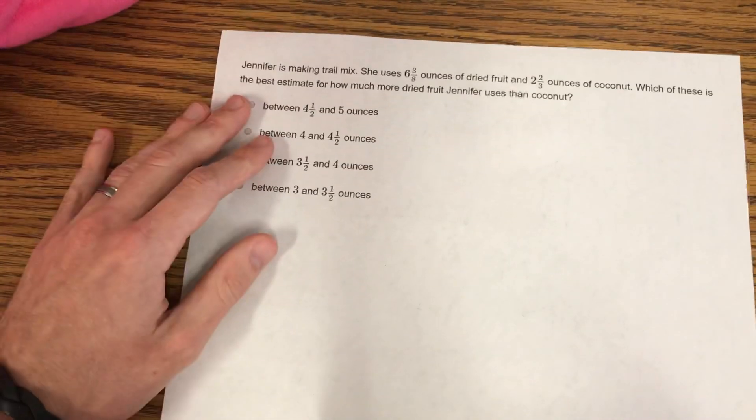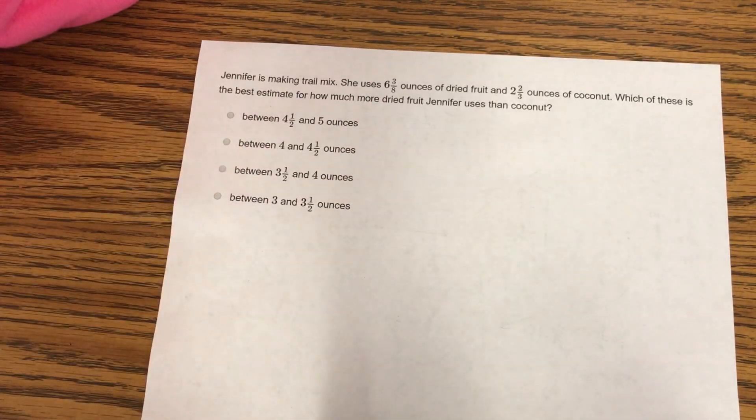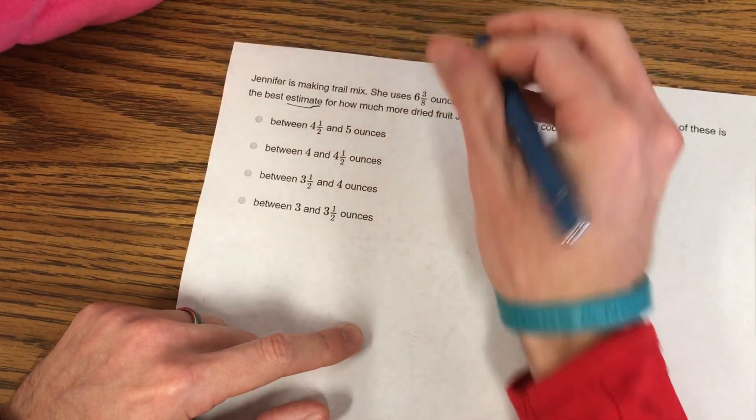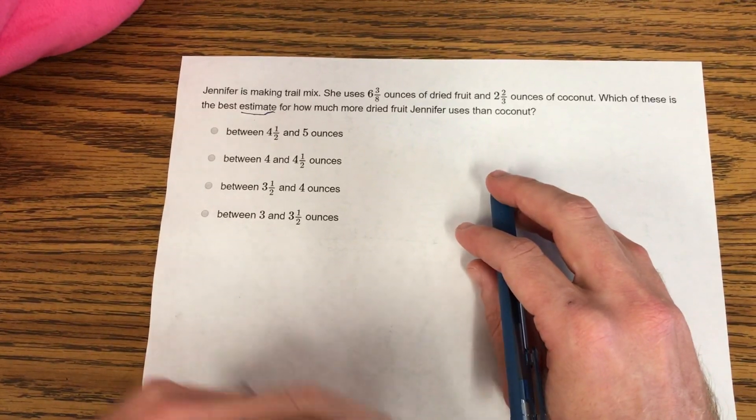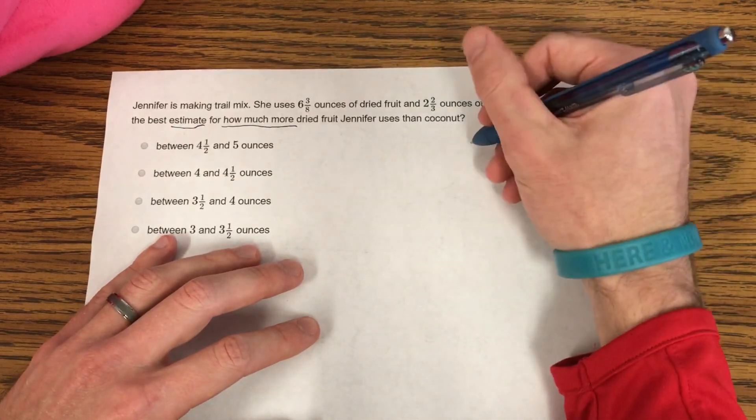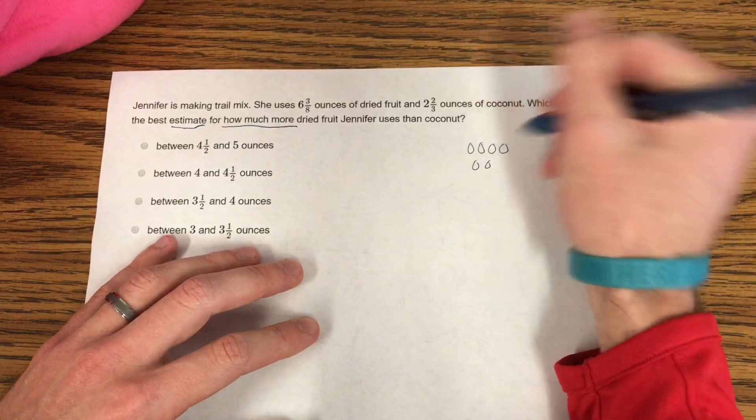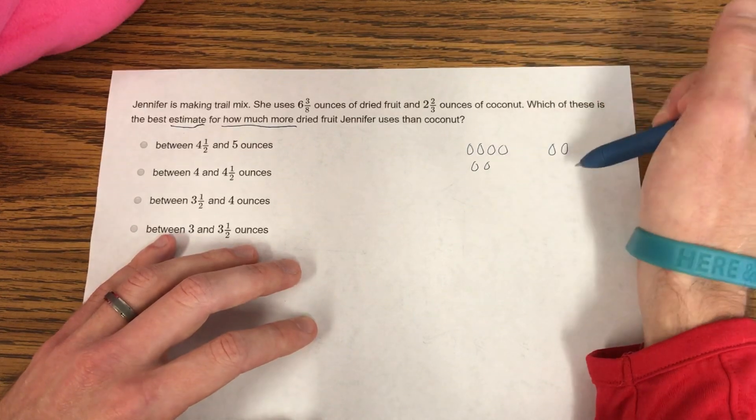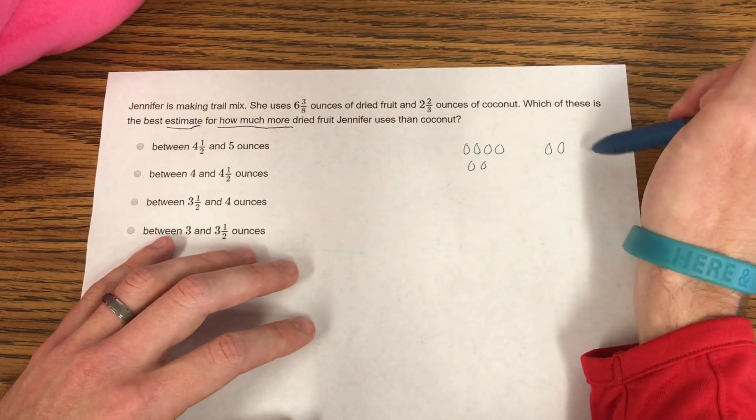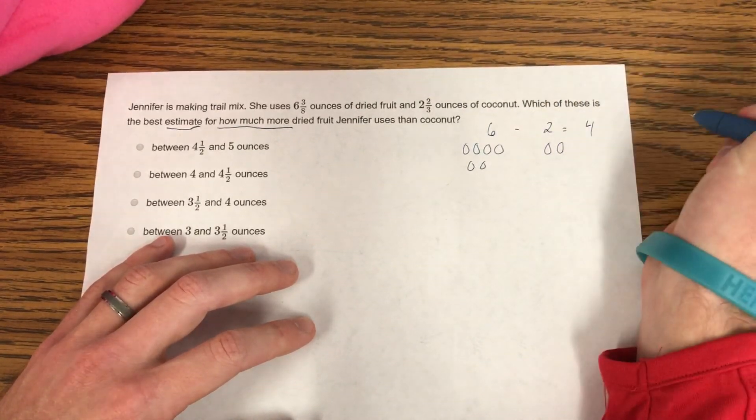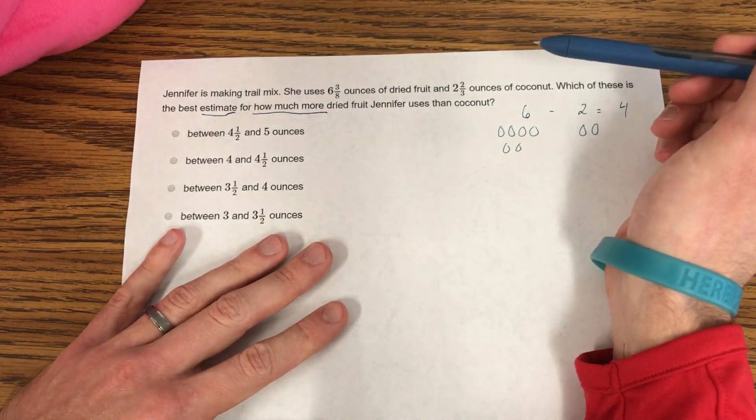Let's take a look at one more question. It says, Jennifer is making trail mix. She uses 6 and 3/8 ounces of dried fruit and 2 and 2/3 ounces of coconuts. Which of these is the best estimate, key word there, for how much more dried fruit Jennifer uses than coconut? How much more? That's like saying Mr. A has 5 cookies and Mrs. Kitzler has 2 cookies. How much more? Mr. A has 6, because he can't count, apparently. How much more does Mr. A have than Mrs. Kitzler? Well, how much more means subtract. So 6 minus 2 is 4. So do we notice how we need to subtract here? It's not an addition one.